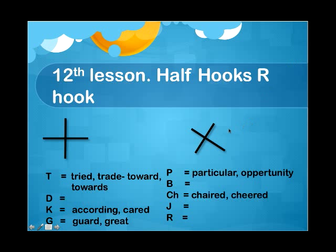The first one is T. For the letter T, we have: tried, trade, and towards. Trade and towards will be the same Gram Lock — according to the situation, we have to select either trade or towards. First, we will see how to write tried, trade, and towards.